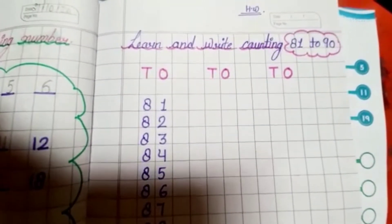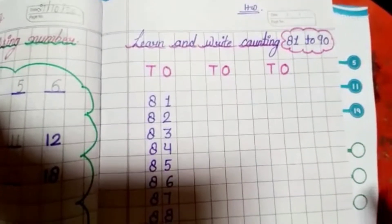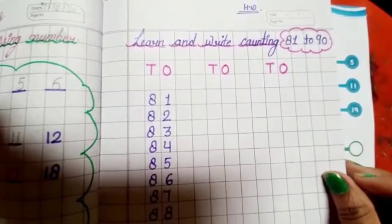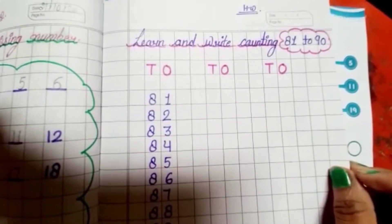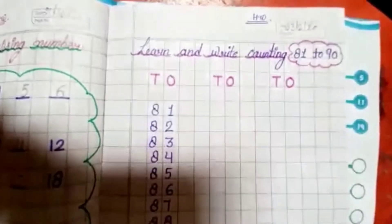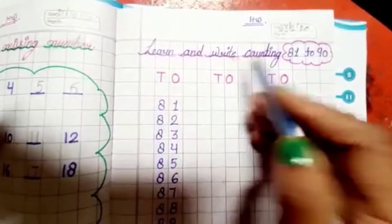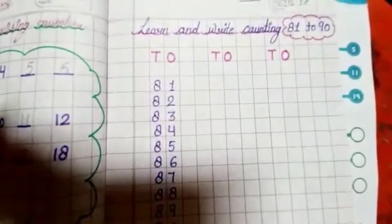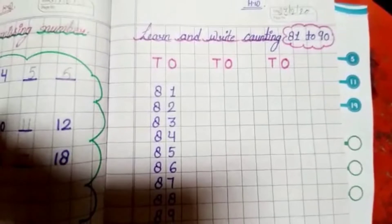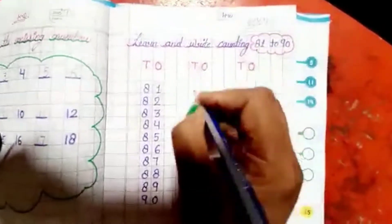Hello students, good morning to all of you. Welcome to TGSE learning platform. Today is your math class. So look at this — this is your math notebook. Learn and write counting 81 to 90. You can write counting. Let's start.